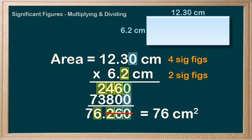So looking at our example, the 6.2 centimeters is the one with the least number of sig figs, two. Given that, we know that our answer must have exactly two sig figs. Therefore, we round to 76 centimeters squared.